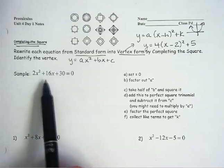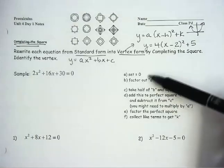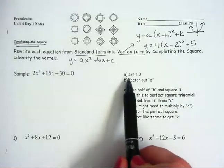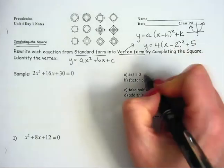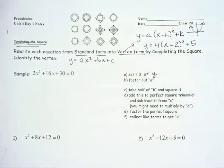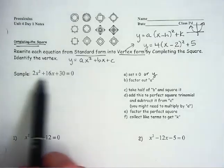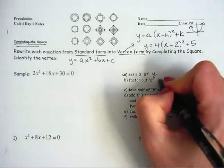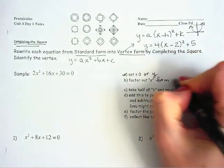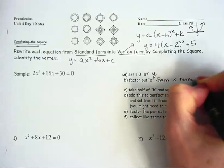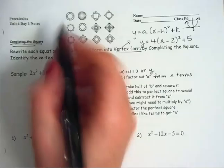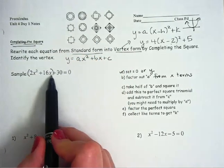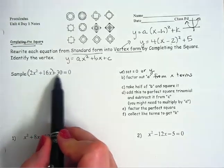So we're going to start with this example right here, and I'm just going to follow these steps one at a time. While I work the problem, I'll explain them. Step A says to set equal to zero or Y. Some of these are set equal to Y, and you can see in this example that is already done. It is set equal to zero. The next step says to factor out A. I want you to factor it out from X terms, because we're not factoring it out from every single term, just this first group of X's.